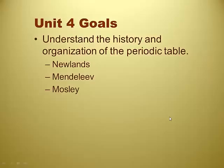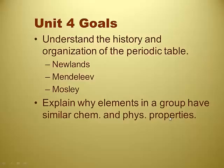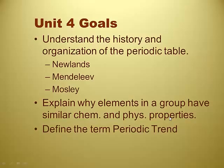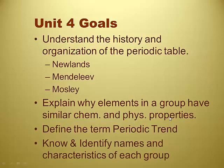According to John Newlands, Dmitry Mendeleev, and a guy by the name of Mosley — these three guys are the main characters. There are other secondary characters with the Periodic Table, but these are the main ones you've got to know. Explain why elements in a group have similar chemical and physical properties. Define the term Periodic Trend, and know and identify the names and characteristics of each group, also called a family. We kind of interchange the names group and family, so don't panic — it is the same thing.